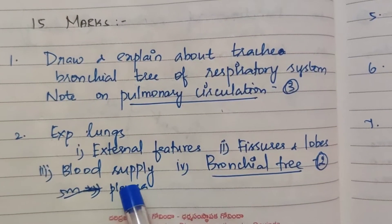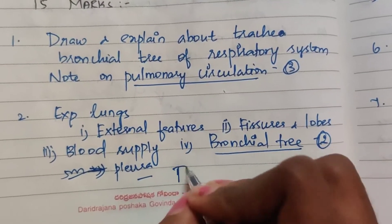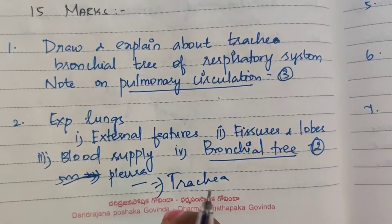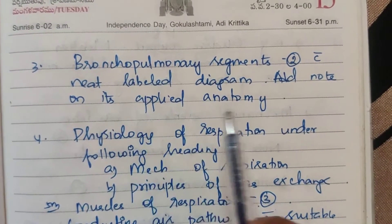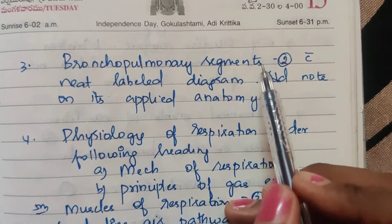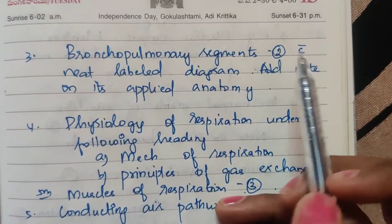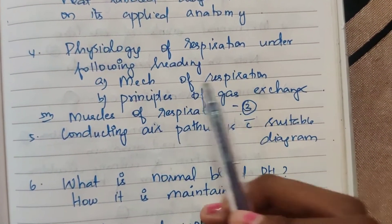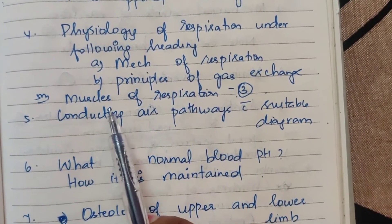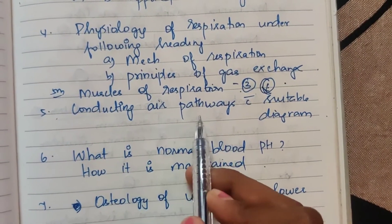Pleura, which is a covering layer of lungs, is mentioned for 5 marks. Third one: bronchopulmonary segments with neat labeled diagram and a note on its applied anatomy — right and left lungs are different — that is 15 marks. Fourth one: physiology of respiration, including mechanism of respiration, principle of gas exchange, and muscles of respiration, 5 marks each. Fifth one: conducting air pathways with suitable diagram — this is all about respiration.